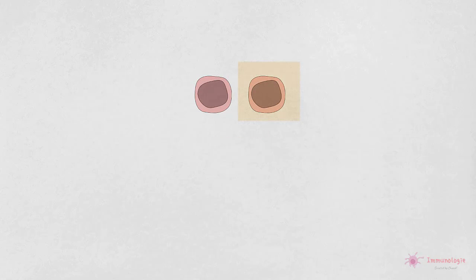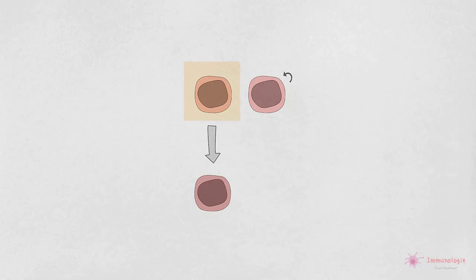La cellule souche hématopoïétique se divise en générant des cellules filles. Certaines cellules filles conservent les caractéristiques de la cellule mère, c'est-à-dire qu'elles restent auto-renouvelables et sont capables de donner naissance à tous les types de cellules sanguines. D'autres cellules filles se différencient en cellules progénitrices qui ont une capacité d'auto-renouvellement limitée et deviennent progressivement plus engagées dans une lignée de cellules sanguines particulières.